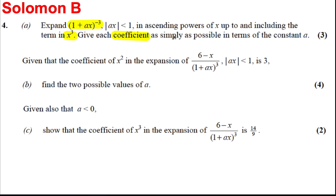Giving each coefficient as simply as possible in terms of A. Then it tells us something about the x squared coefficient. It tells us it's 3 and then work out two possible values of A. And lastly, given that A is less than or equal to zero, show that the coefficient of the x cubed term is 14 over 9. Quite a complicated, more involved question here. So let's have a go at this.